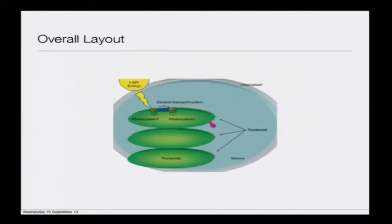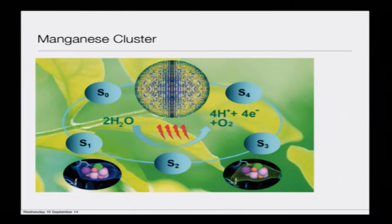The overall layout of the system is something like this: you see the membrane where you have photo system two, photo system one, and the electron transport complex. Now I will move on to something called the manganese cluster — the critical part of the game where the water is getting split. This is the inspiration to make photoelectrochemical cells in the modern day.